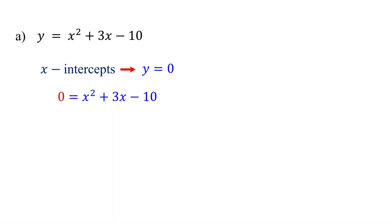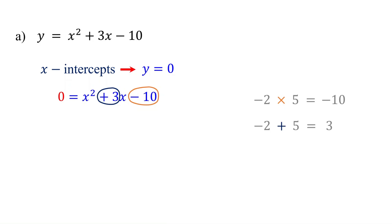Let's use the factoring method. We need to find two numbers that multiply to give negative 10 and add up to 3. We know that 2 times 5 equals 10, but if we make 2 negative, they multiply to negative 10 and also add up to 3. So negative 2 and 5 are the two numbers we are looking for. Therefore, when we factor this quadratic equation, it becomes (x minus 2) times (x plus 5).